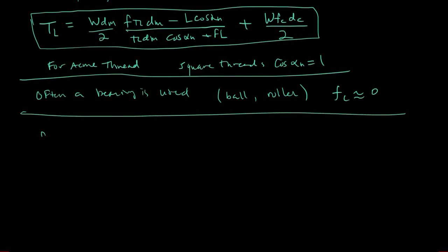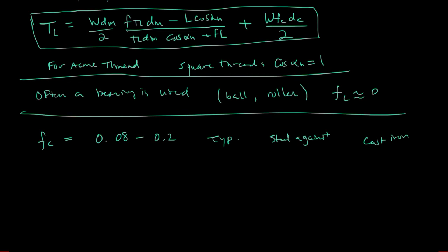The friction in the collar is typically between 0.08 to 0.2 for the typical case of steel against cast iron or bronze.